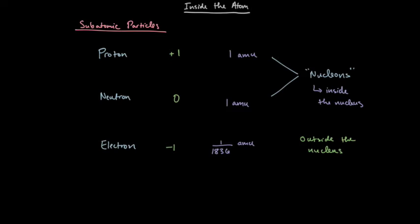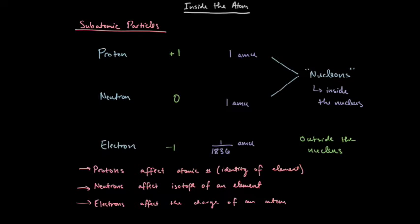And then next we see their masses. Protons have a mass of 1 amu, and so does the neutron. The electron is a fraction of these sizes. It's very small in comparison. The proton and the neutron are what we call the nucleons, because they're located inside the nucleus. The electrons, on the other hand, are located outside.